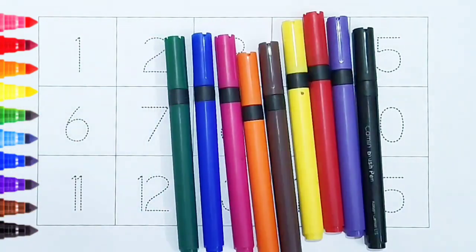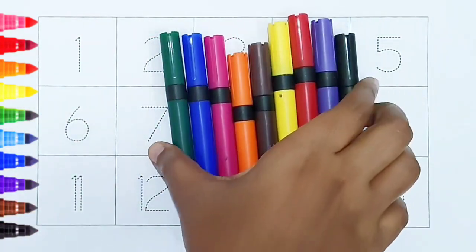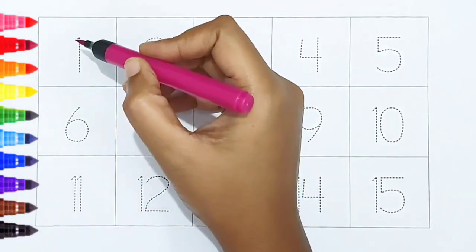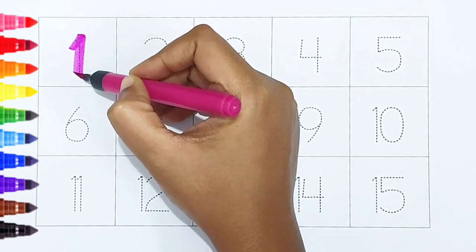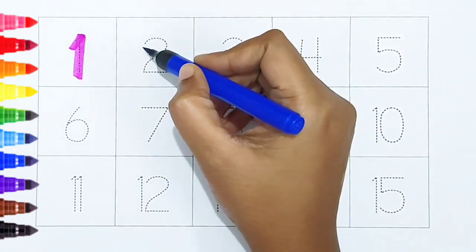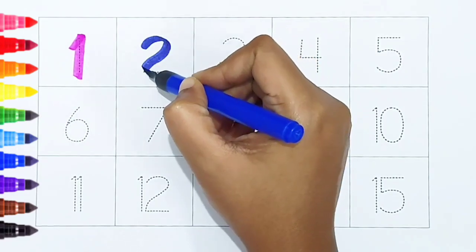Hi kids! Today we can learn the numbers from 1 to 15. Let's begin. One, dark pink color. One, dark pink color. Two, dark blue color. Two, dark blue color.